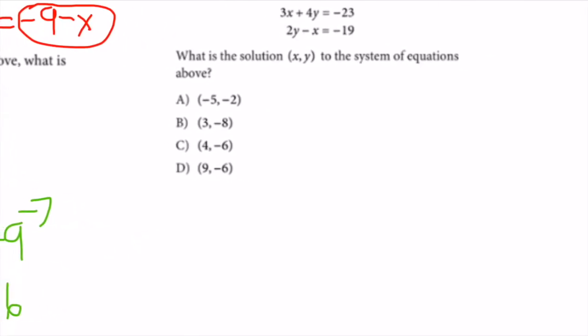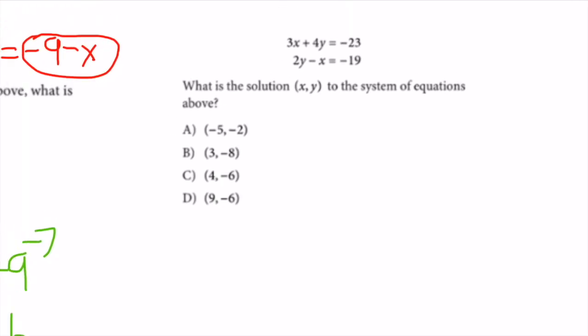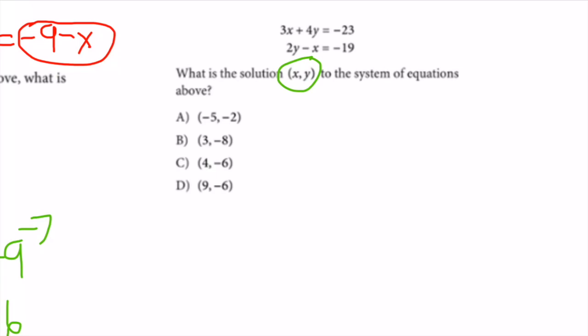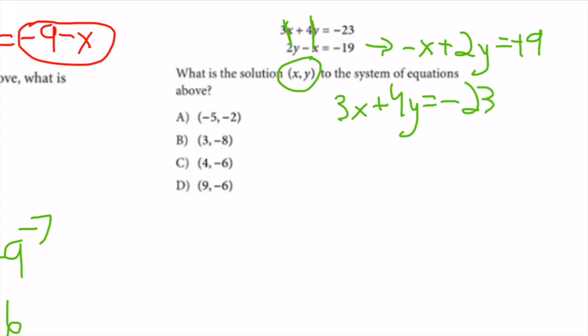I'll solve the next one by elimination. First I should notice that this time I do need both x and y. First thing I do is line up my x's and y's. Leaving the top the same, I flip x and y in the bottom equation, giving 3x + 4y = -23 and -x + 2y = -19.